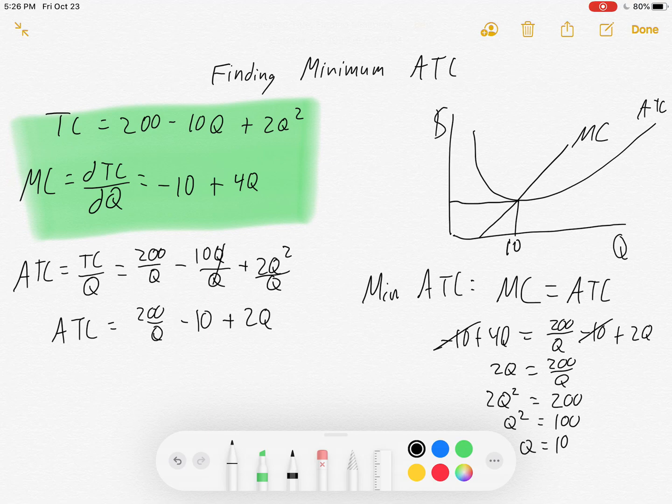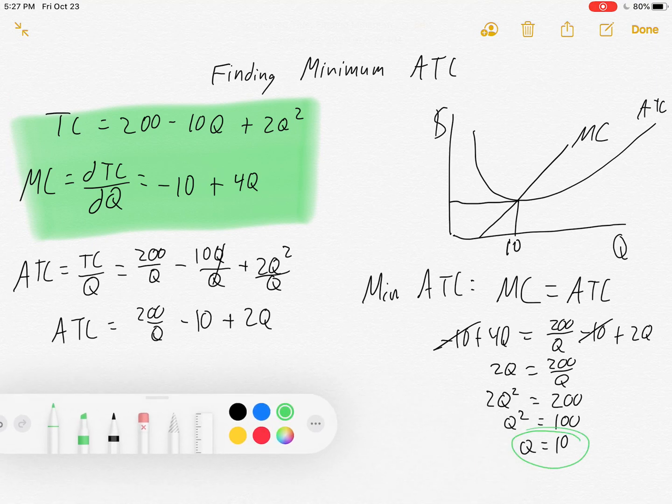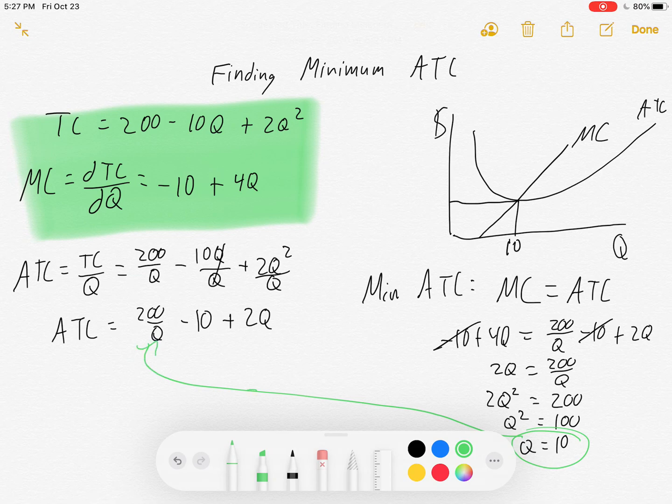Now, we have not found the minimum average total cost yet. We found the Q where the minimum average total cost exists. In order to find the minimum average total cost now, we're going to take this Q and plug it into the average total cost function.